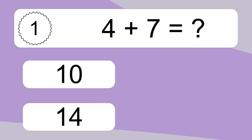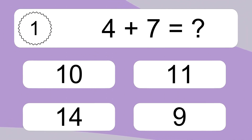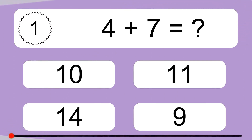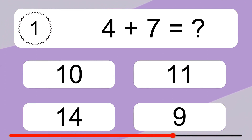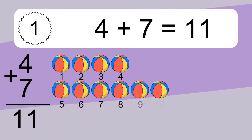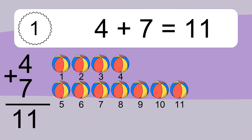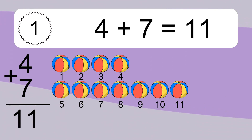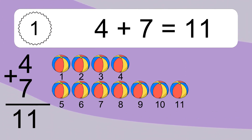4 plus 7 equals what? 1, 2, 3, 4, 5, 6, 7, 8, 9, 10...